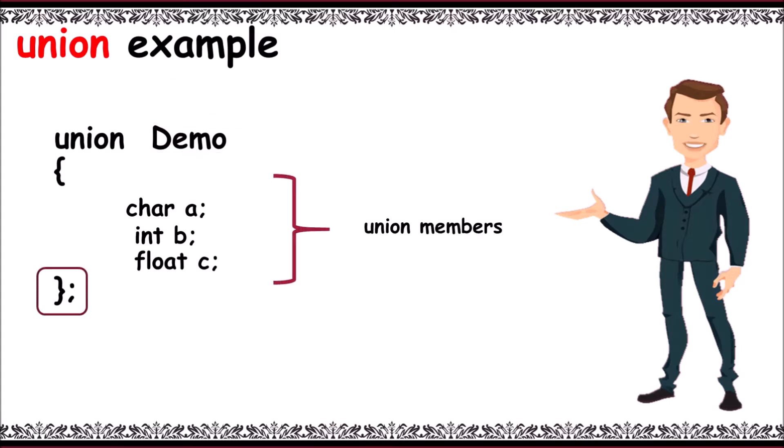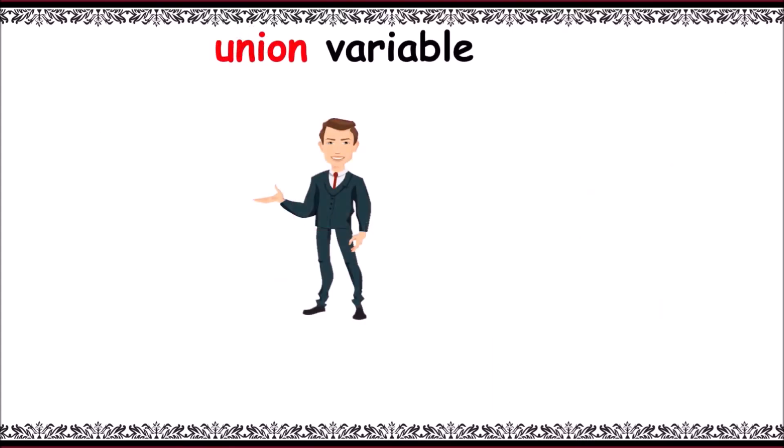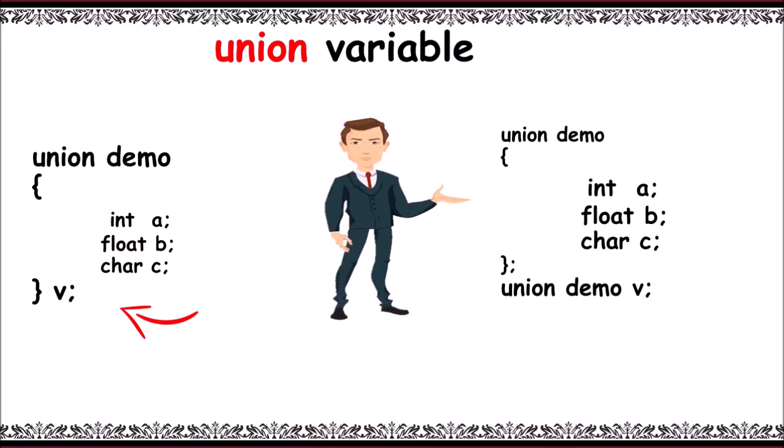Here's the definition: union is used to store different types of elements. One member can be used at a time. The advantage of unions is it doesn't waste memory. Similar to structures, unions have the same types of variable declaration: declaring before semicolon, and declaring after union, that is, union demo v.